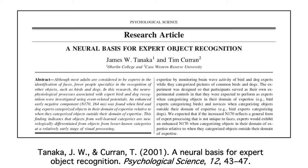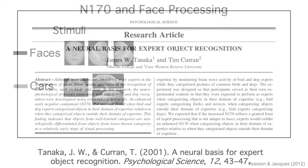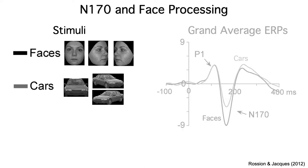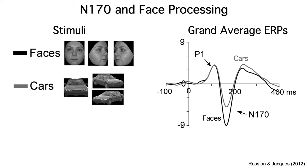The study focuses on the N170 component, which is widely used to study face perception. Here are the stimuli from a typical N170 experiment. Subjects were shown a sequence of faces and cars, each of which was flashed briefly on a computer screen. For each subject, a face ERP was computed by averaging across all the faces, and a car ERP was computed by averaging across all the cars. The waveforms shown here are averaged across all the subjects — we call these grand average waveforms.